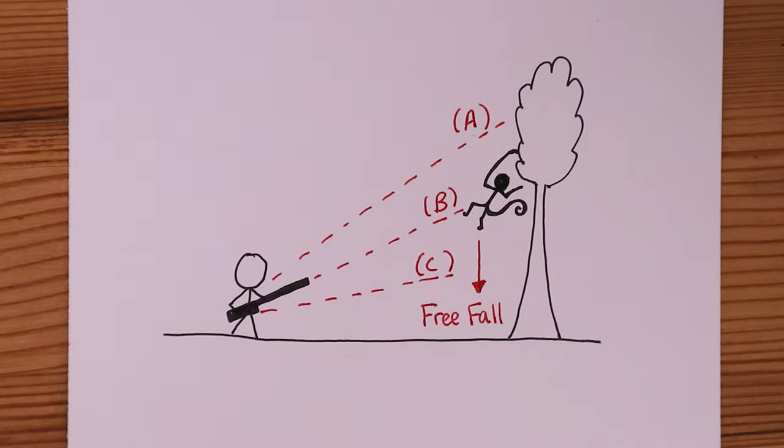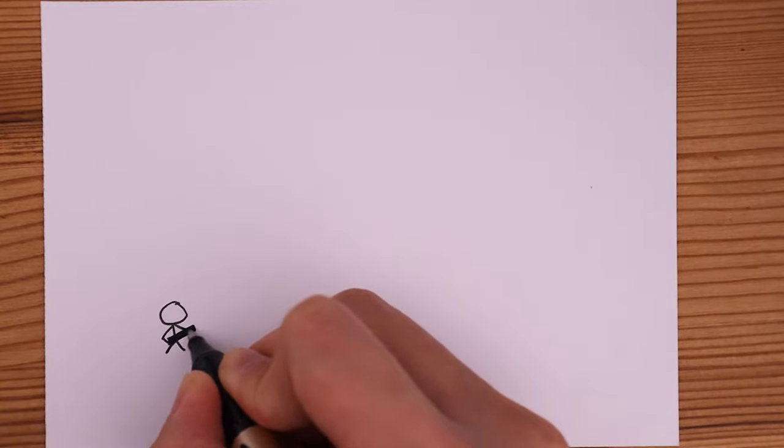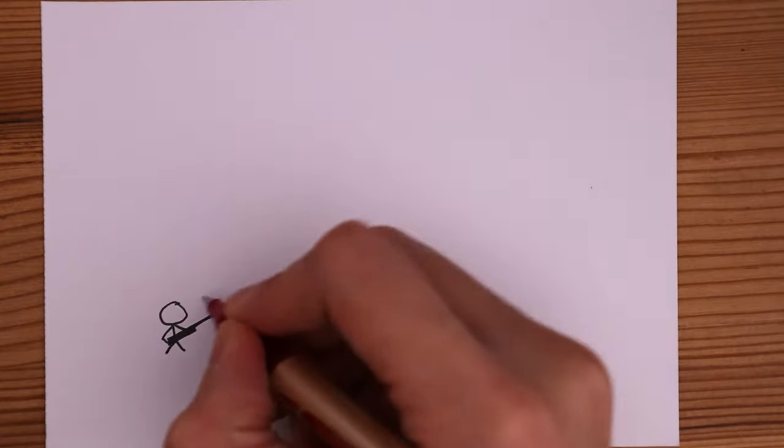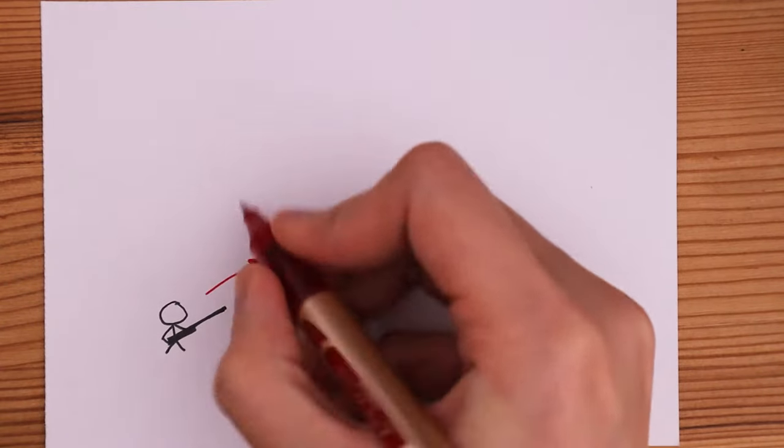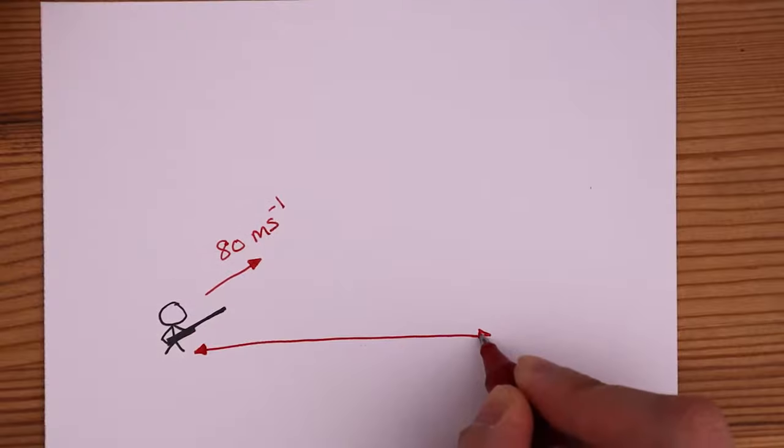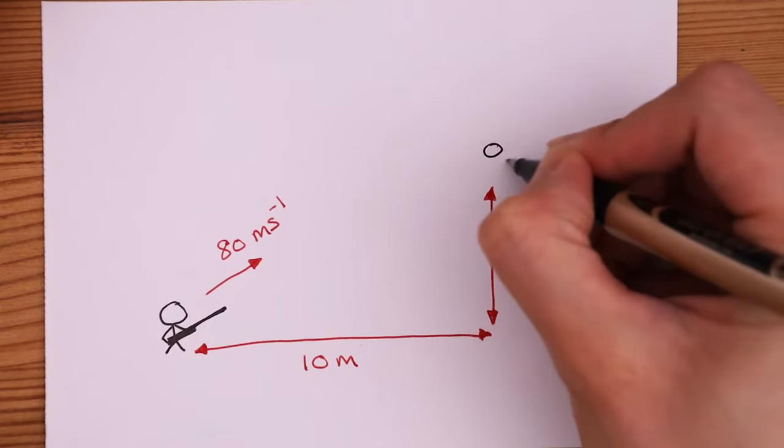Usually this problem is taught and solved using arbitrary parameters, but I think it's more straightforward if we have some numbers to work with. So take a look at this example. The rifle that the hunter has shoots with a barrel velocity of 80 meters per second. The hunter is 10 meters away from the monkey that is hanging 3 meters above ground.